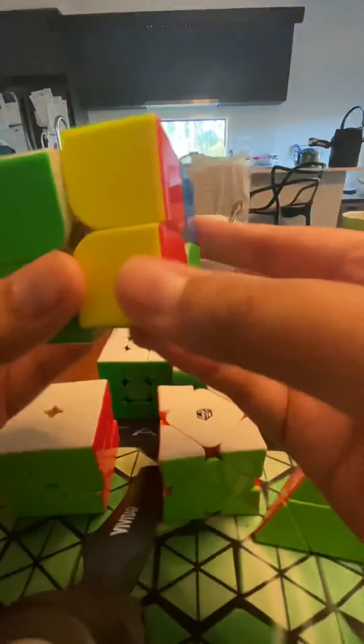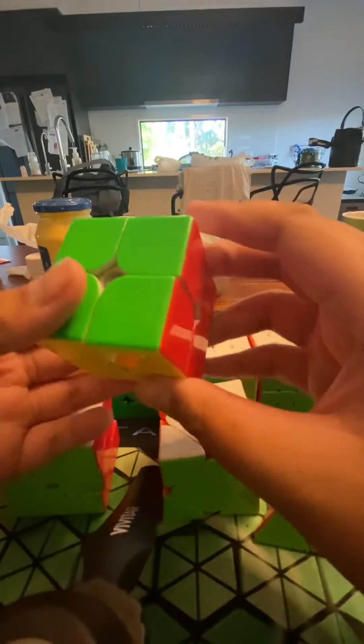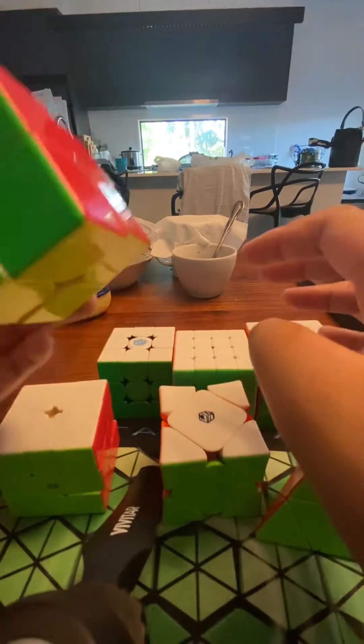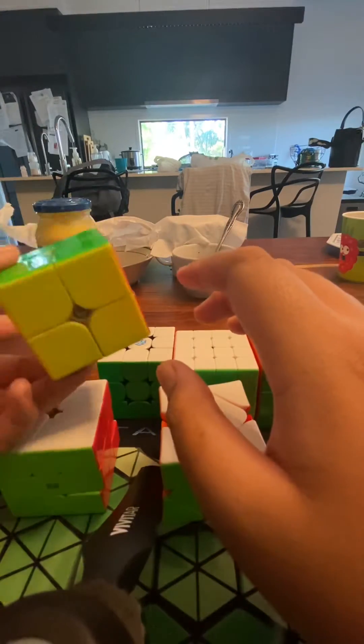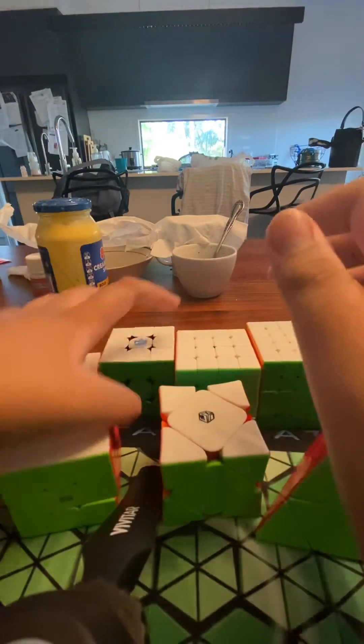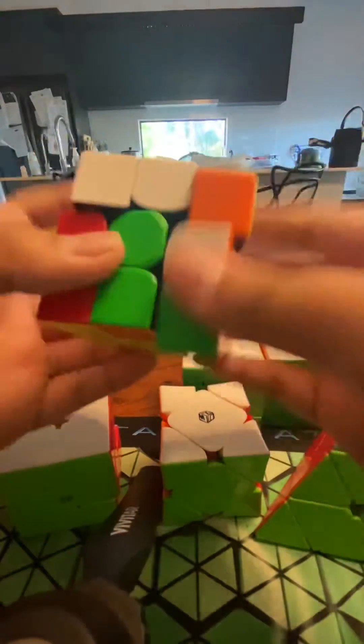My goal is to get about a sub-10 average and about a sub-6 single. Not really much about 2x2, I don't really care about this event. But okay, if you like it then you like it. For 3x3 I got the XS.